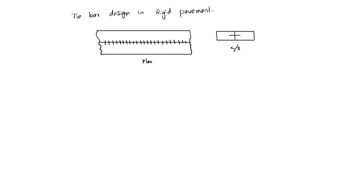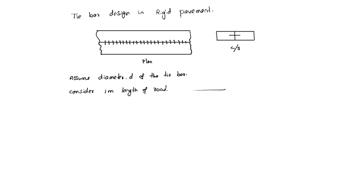First, assume the diameter D of the tie bar. Consider 1 meter length of road. This 1-meter segment is used as the basis for the design calculation, as shown in the diagram.